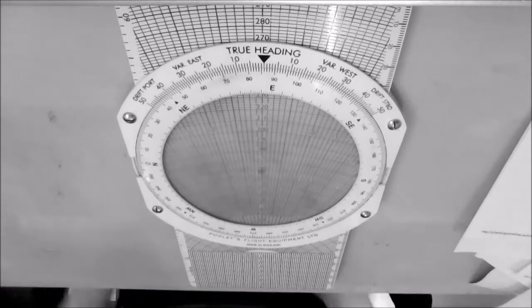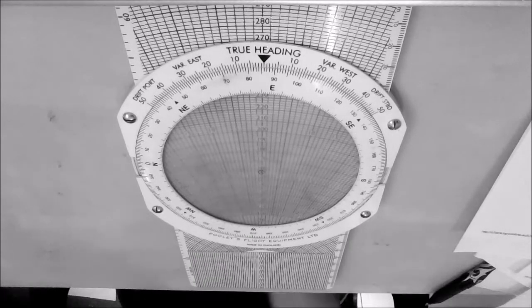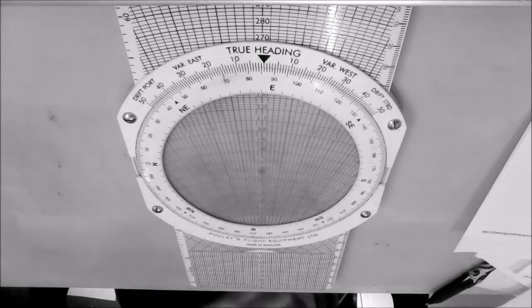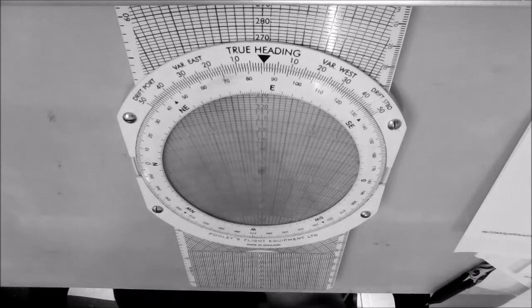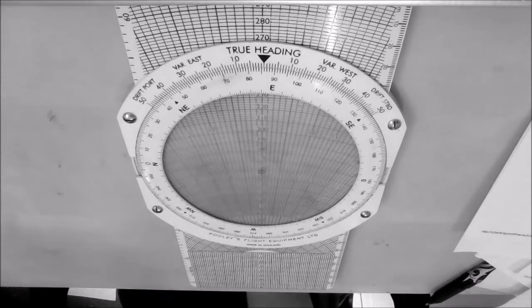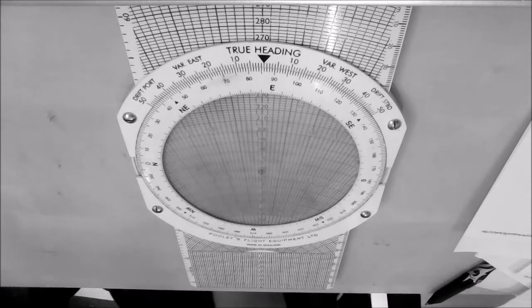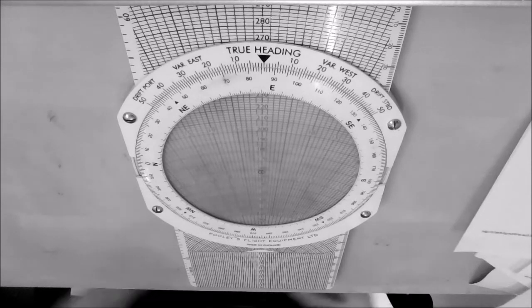Okay, what you now need to do is work out the difference between your heading and your true track, which for us in this question is 8 degrees. And because our track is greater than our heading, it means that it will be 8 degrees to the right.